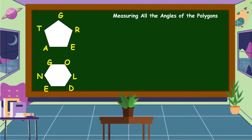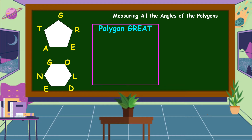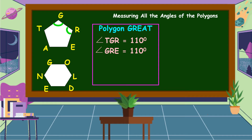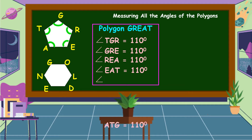We are also measuring the angles of the polygons. For polygon GREAT, angle TGR measures 110 degrees, angle GRE measures 110 degrees, angle REA measures 110 degrees, angle EAT measures 110 degrees, and angle ATG measures 110 degrees.